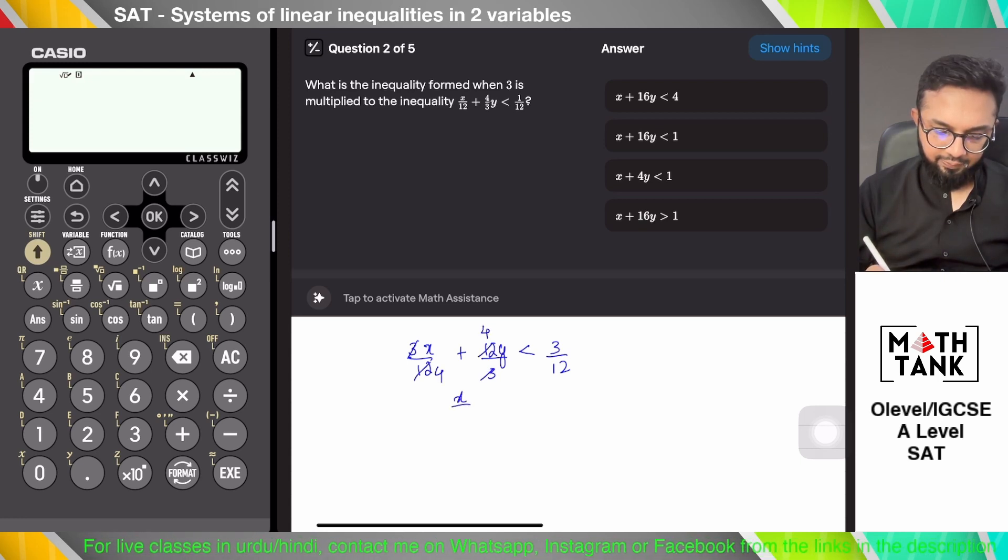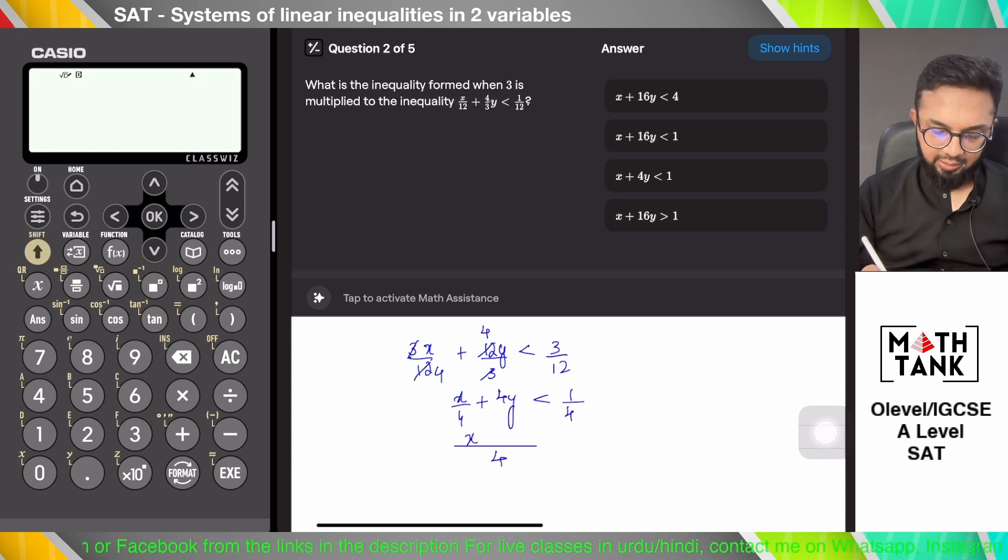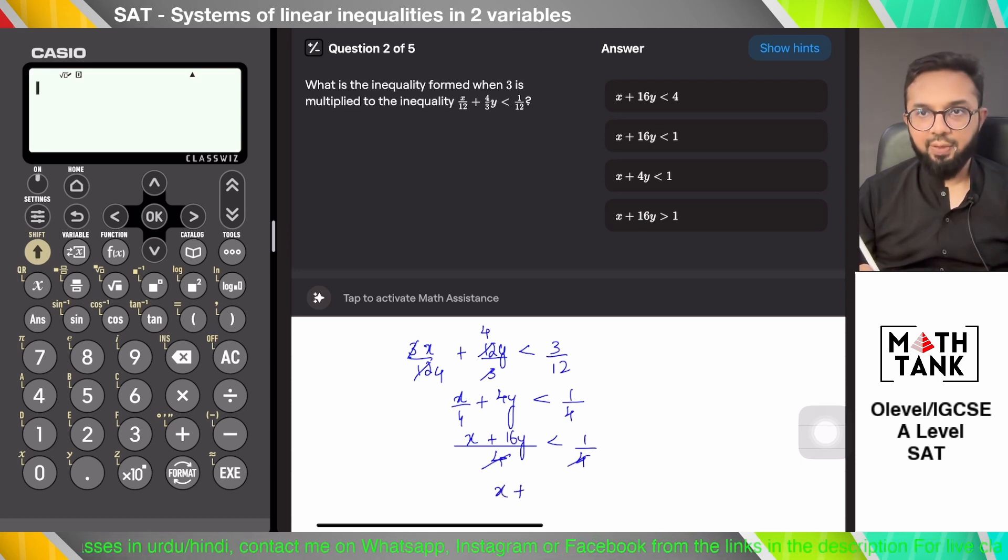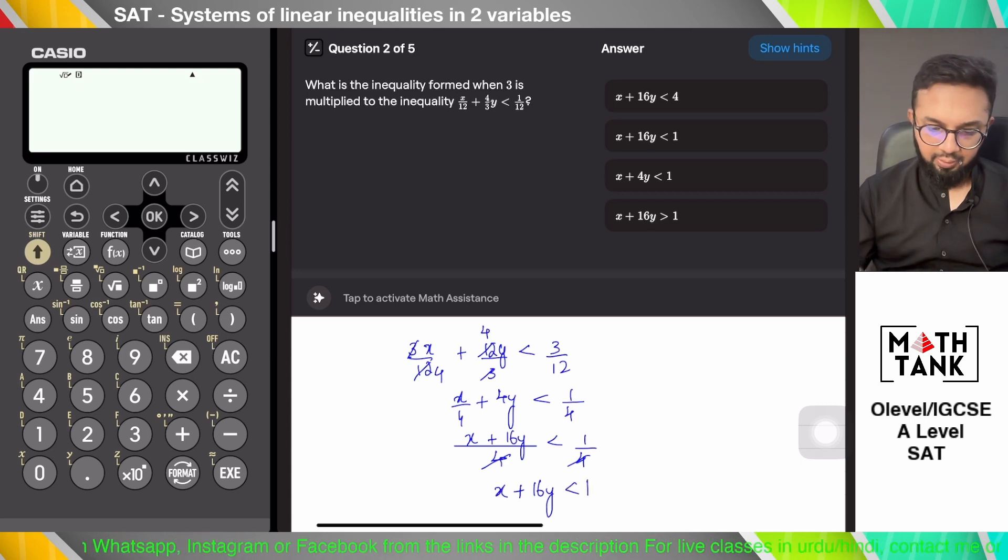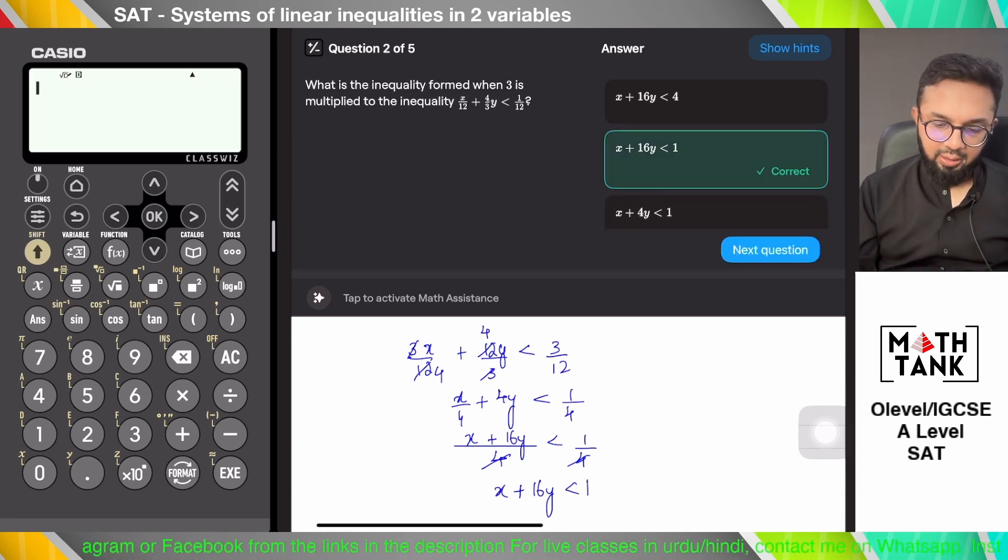So x over 4 plus 4y is less than 1 over 4. Can I take a 4 common again? x plus 16y is less than 1 over 4. This should cancel out because they're both positive numbers. I don't have an issue cancelling out, so B is the right answer.